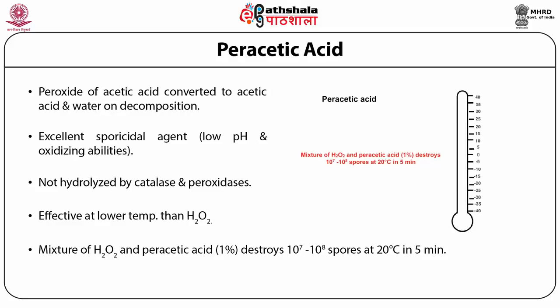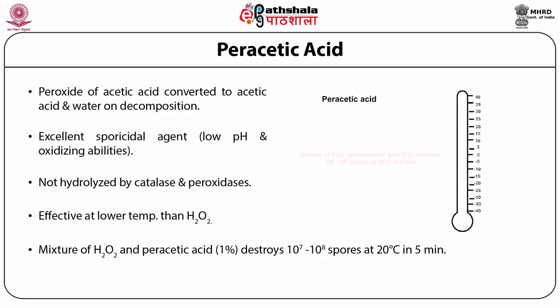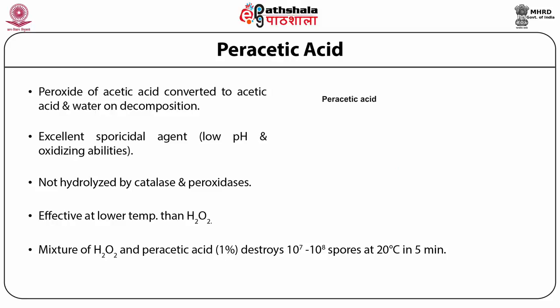For example, a 1% solution will eliminate 10^7 to 10^8 resistant spores in 5 minutes at 20 degrees Celsius. The minimum usable temperature is 40 degrees Celsius, when the sterilization times are about 5 times shorter.